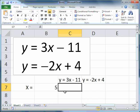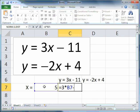In cell C7, I'm going to enter the equation, the formula for the first equation, which is 3 multiplied by x, which is cell B7 minus 11.